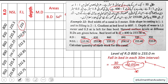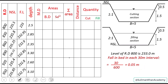Depth at each station is the difference between the formation level and the NSL. The mean depth is calculated by adding two consecutive depths and dividing by two. For example, 2.5 plus 2.85 divided by 2 gives a mean depth of 2.67. Similarly, 2.85 plus 2.35 divided by 2 gives 2.6, and so on.